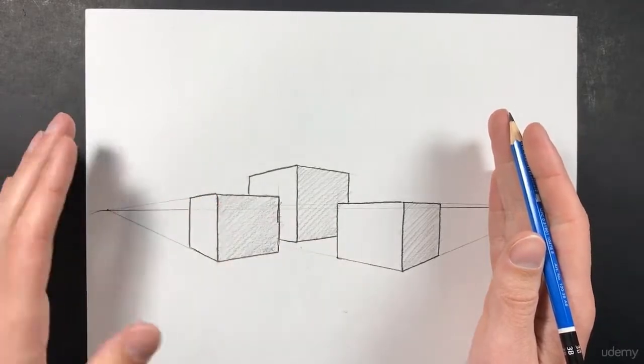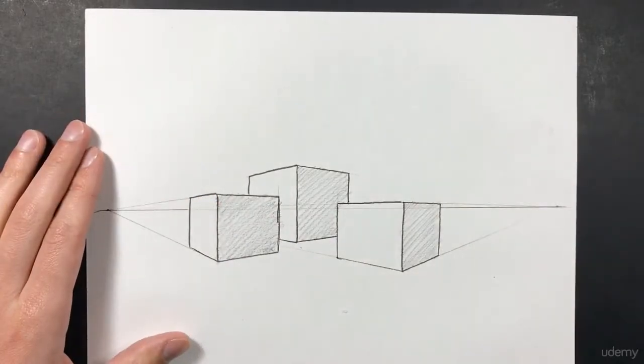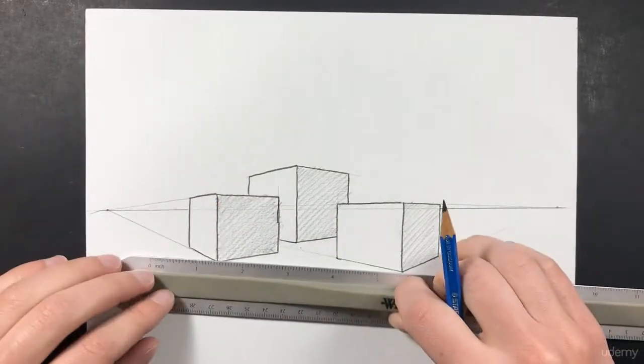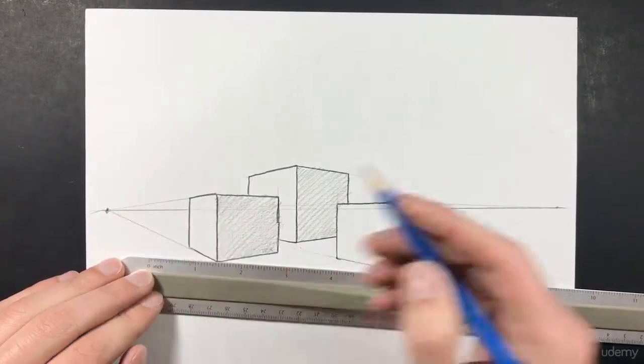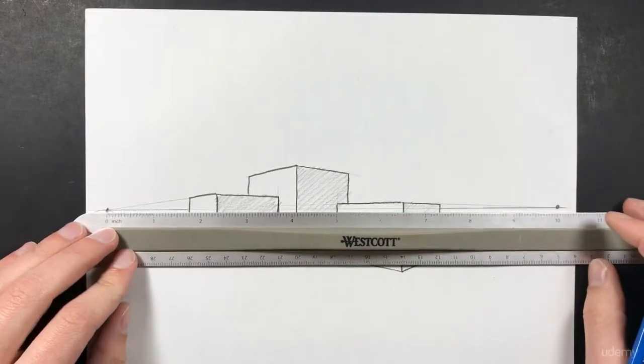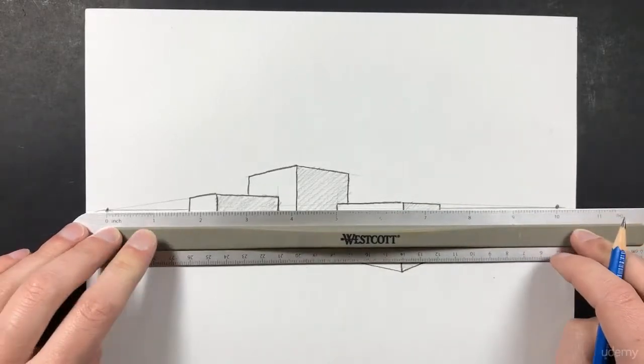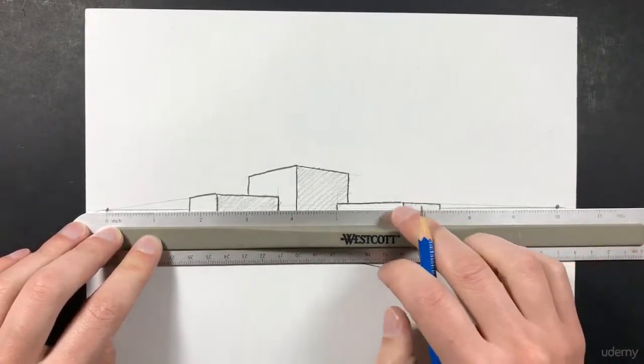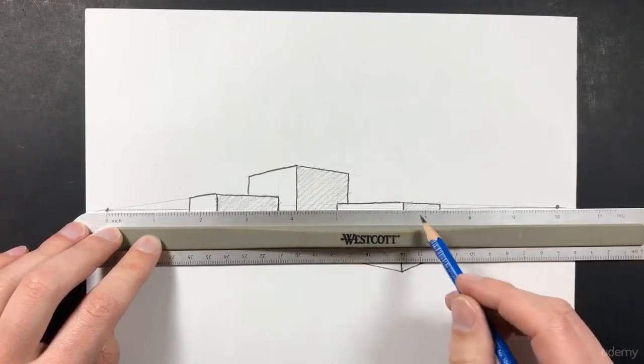So let me show you what I mean. So if I grab my ruler right here, I have one vanishing point right here and I have another one right over here. And the distance between those two vanishing points is 10 inches. So 60 percent of that would be six inches.